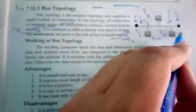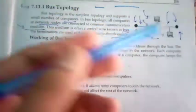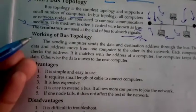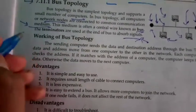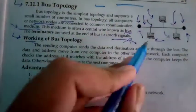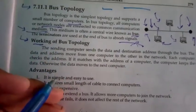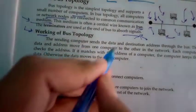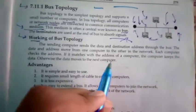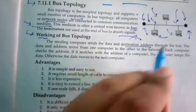signals do not escape and remain inside the network. Next, we have the working of bus topology. The sending computer sends the data. For example, this computer sends the data and destination address.